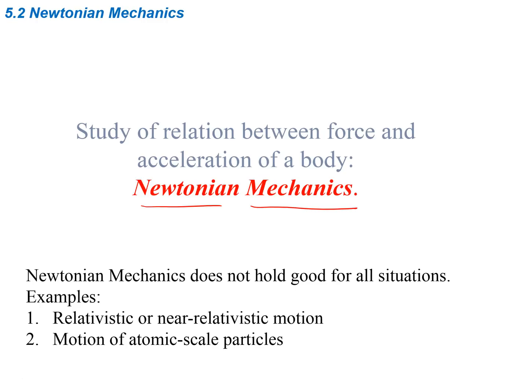Newtonian mechanics does not hold good for all situations. Examples of some situations that don't work for Newtonian mechanics are either relativistic or near-relativistic motion, and then motion at the atomic scale — either something going really fast in relativistic motion, or something really small down to the molecular or atom-sized particles.